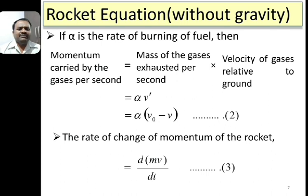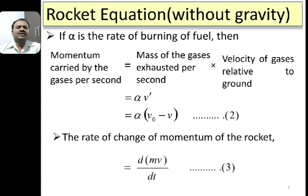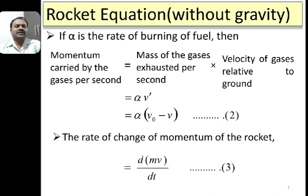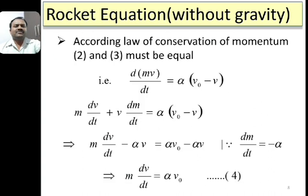If m is mass and v is velocity of the rocket at any instant, its momentum is m × v. The rate of change of momentum of the rocket is d/dt(mv), which is equation 3. According to the law of conservation of momentum, equation 2 and equation 3 are equal. Therefore, d/dt(mv) = alpha × (v0 − v).